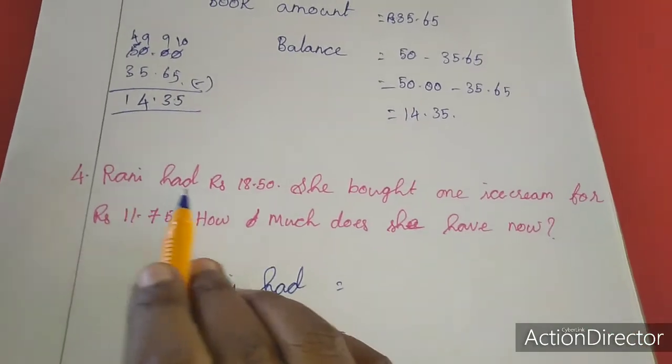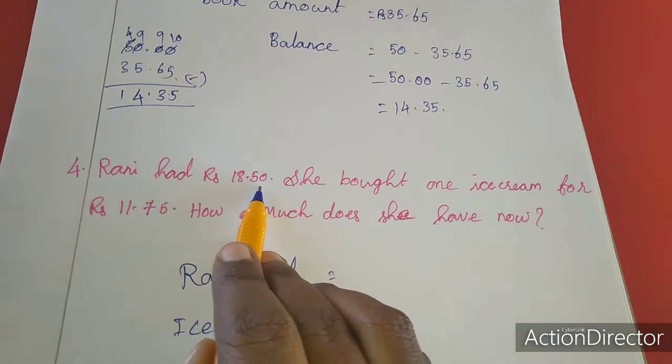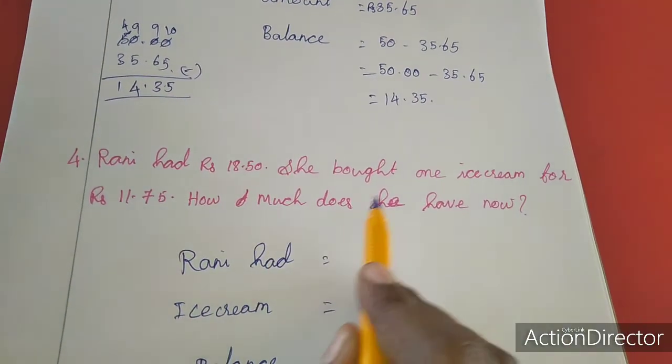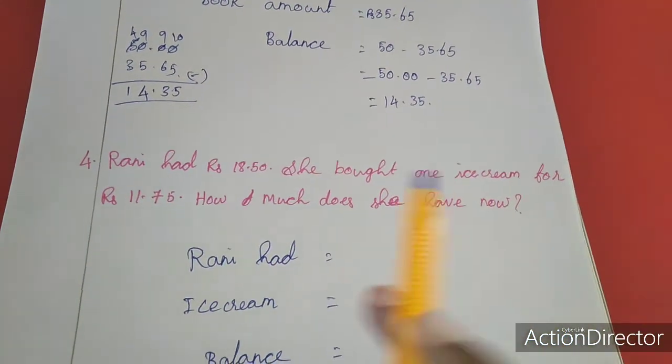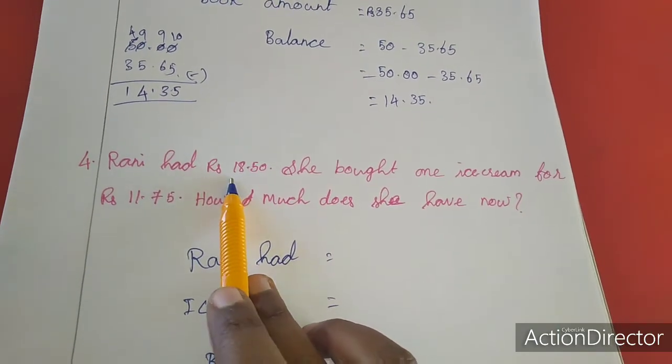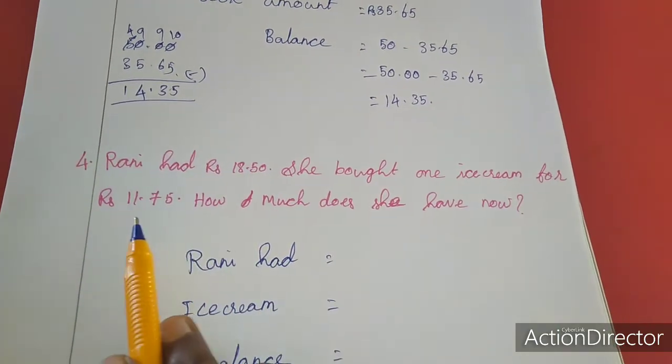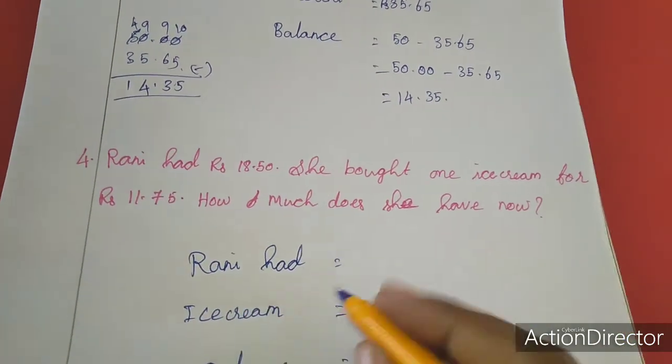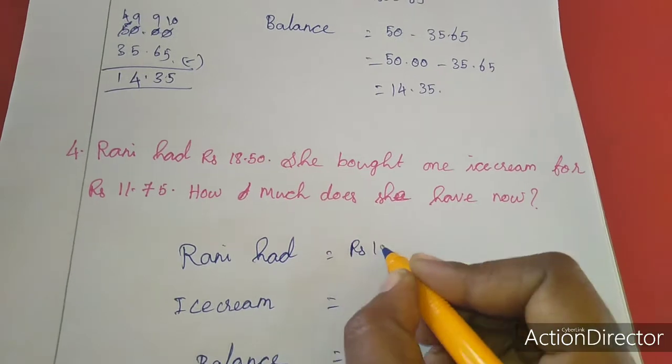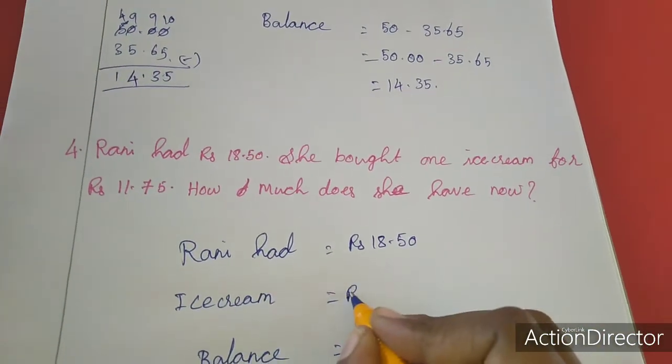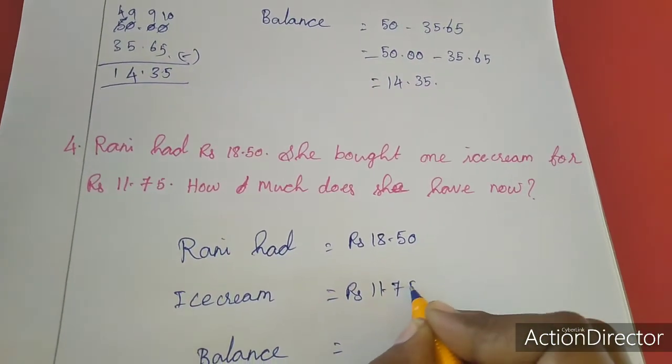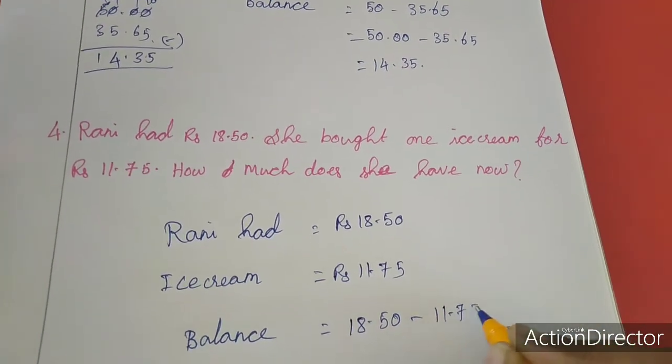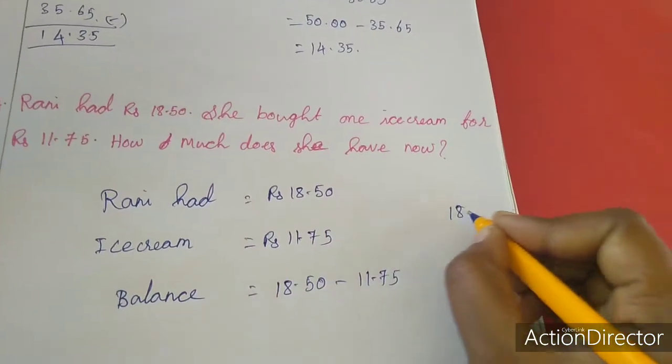Now fourth sum. See here, Rani had rupees 18.50. She bought one ice cream for 11.75. How much did she have now? Rani had rupees 18.50. So balance equal to 18.50 minus 11.75. Subtraction I am doing here, 18.50.